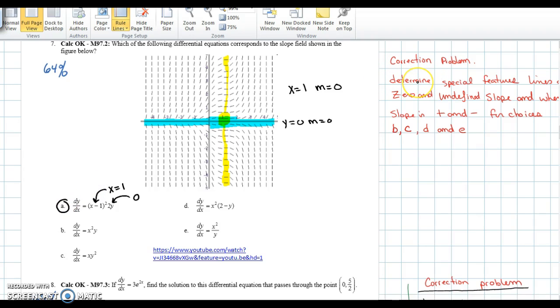Your correction problem is to determine where choices B, C, D and E have 0 and undefined slope and in what quadrants the slope is positive or are always negative.